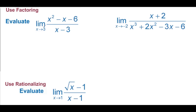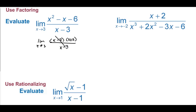Use factoring to evaluate. If you plug 3 in, the numerator gives 9 − 3 = 6, then 6 − 6 = 0, which isn't an issue, but the denominator gives 3 − 3 = 0, which is a problem. So we factor: the limit as x approaches 3 of (x − 3)(x + 2) over (x − 3). The (x − 3) terms cancel, leaving the limit as x approaches 3 of x + 2, which equals 3 + 2 = 5.